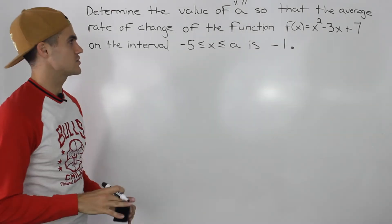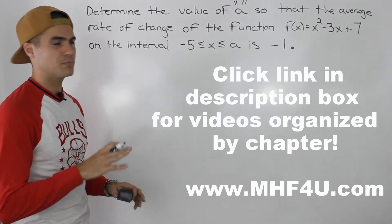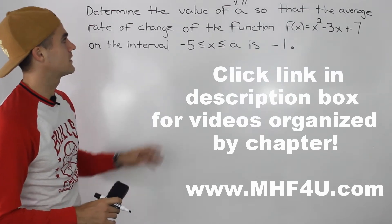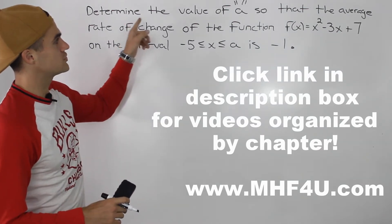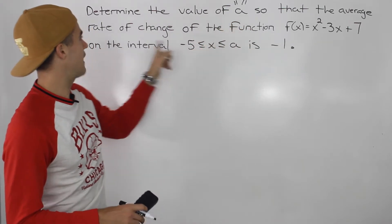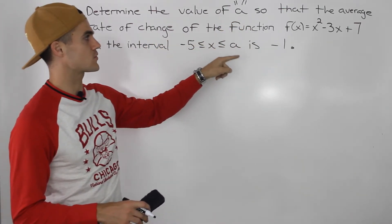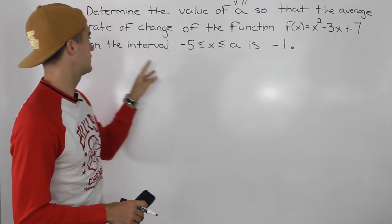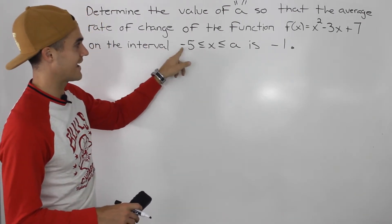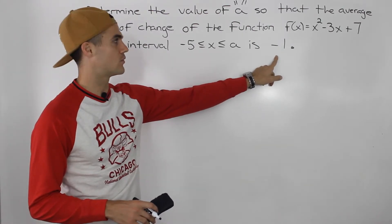Moving on to the next question. This question is going to be pretty tricky because it's a little bit different than the questions that we've been doing so far. We have to determine the value of a so that the average rate of change of the function f(x) = x² - 3x + 7 on the interval where x is between negative 5 and a is negative 1.